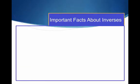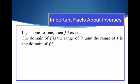A few important facts about inverses. If F is one-to-one, then F inverse exists. So one-to-one is something we are going to have to check for. The domain of F is the range of F inverse, and vice versa, the range of F is the domain of F inverse, just meaning domain and range flip for inverses.